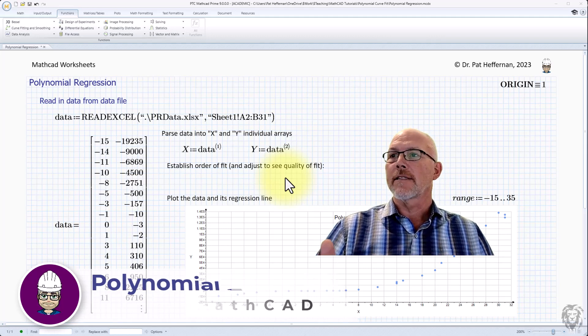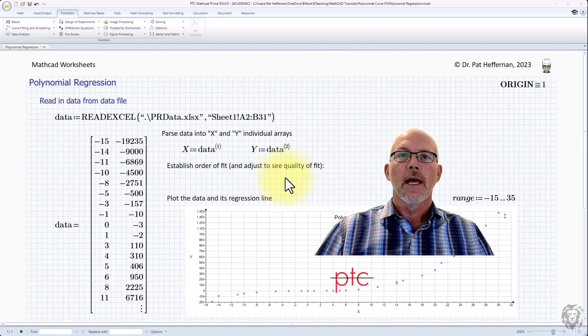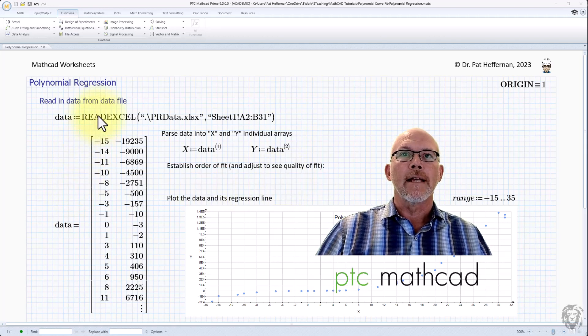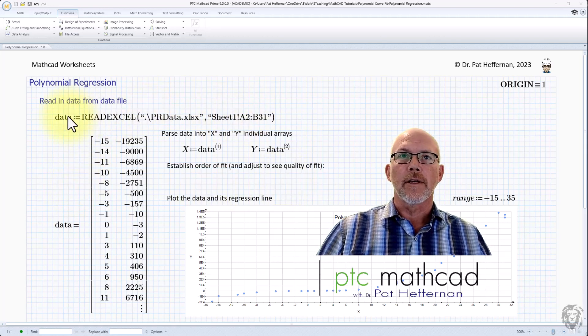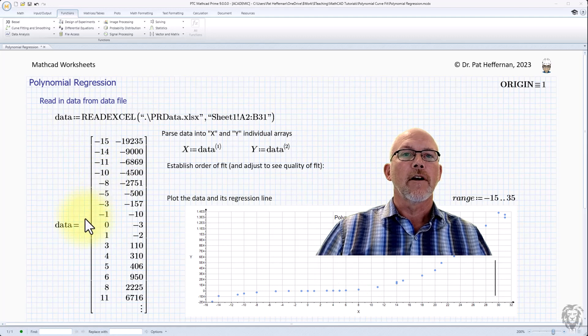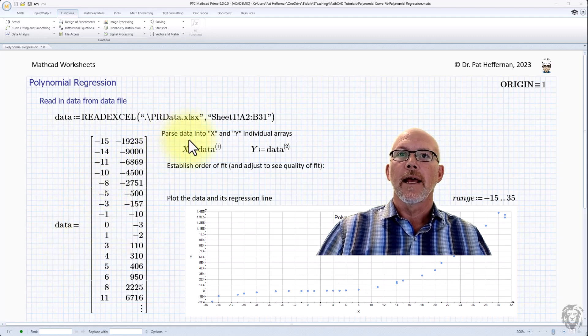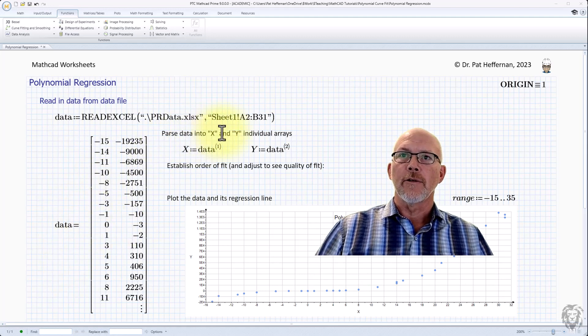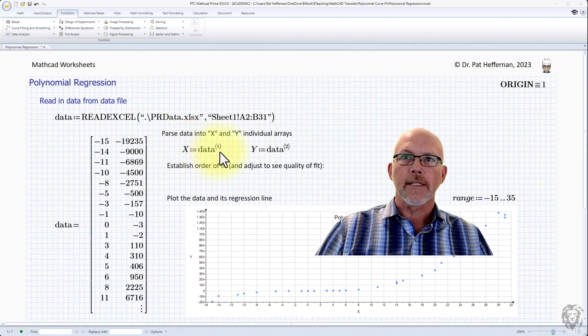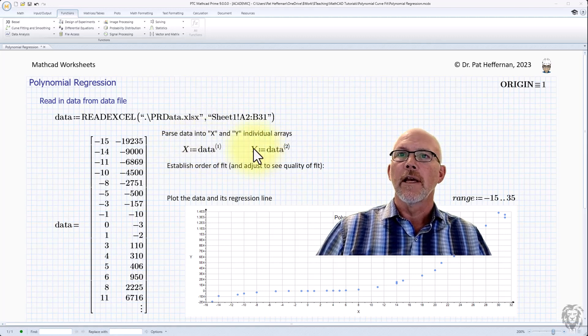I've set this up very similar to the last couple of videos. I've read in my data from Excel, so you see the data read Excel function there. The data is just displayed and I have parsed that data into x and y individual arrays. So x is equal to the first column of the data array, y is equal to the second column of the data array.